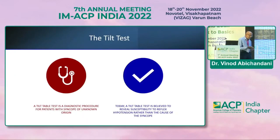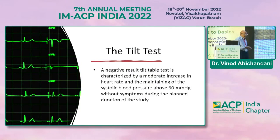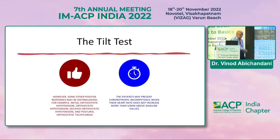A tilt table test is a diagnostic procedure for patients with syncope of unknown origin. It is believed to reveal susceptibility to reflex hypotension rather than the cause of syncope. A negative result is characterized by a moderate increase in heart rate and maintenance of systolic BP above 90 mmHg without symptoms. The test can also distinguish between initial, classic, and delayed orthostatic hypotension, POTS, and chronotropic incompetence where heart rate does not increase more than 5 beats above baseline.